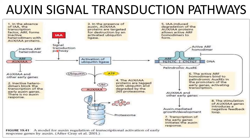In the presence of auxin, AUX/IAA proteins are targeted for destruction by an activated ubiquitin ligase. AUX/IAA proteins are tagged with ubiquitin and degraded by the 26S proteasome. The IAA-induced degradation of AUX/IAA proteins allows active ARF homodimers to form.